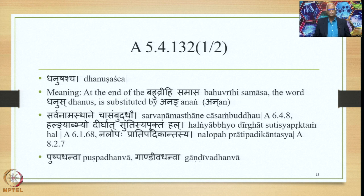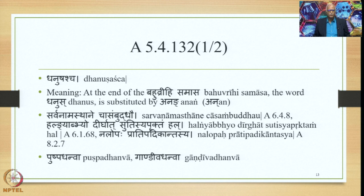We go to the next Sutra, 5.4.132, which is Dhanushascha. At the end of the Bahuvrihi Samasa, the word Dhanush is substituted by Anang (i.e., An). The relevant Sutras here are Sarvanamastane Chasampuddhau (for lengthening), Halgyam Bhavadirghat Sutrisapraktamhal (for deletion of Su), and Nalopap Pratibadigantasya (to delete the final Na). Examples include Pushpadhanva and Gandiva Dhanva.